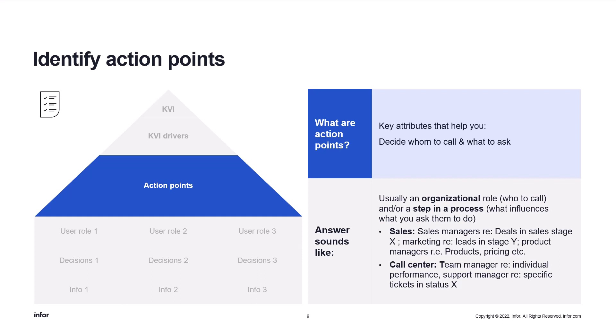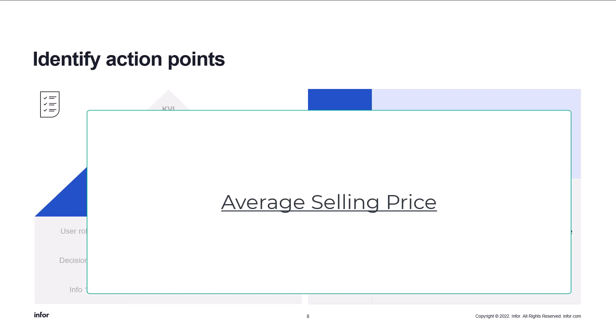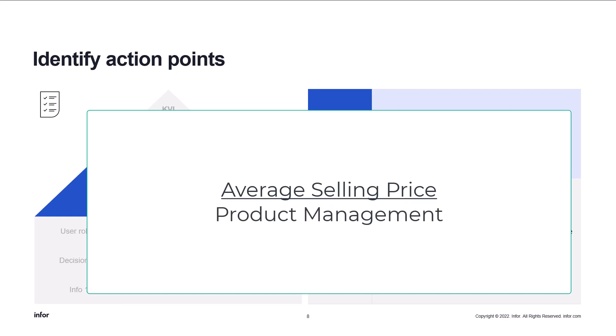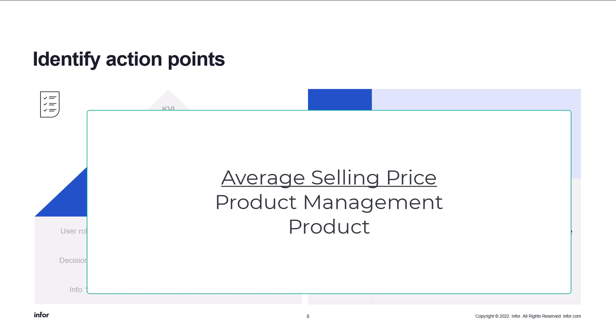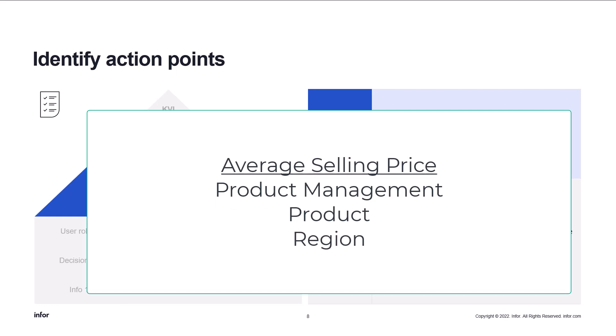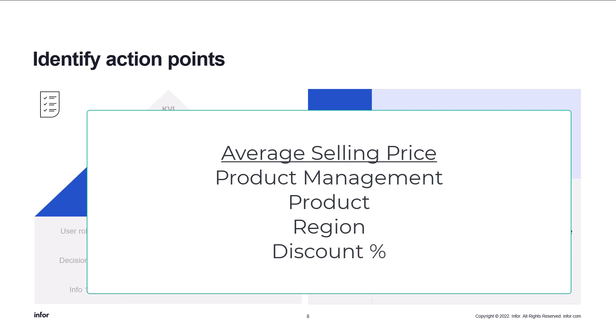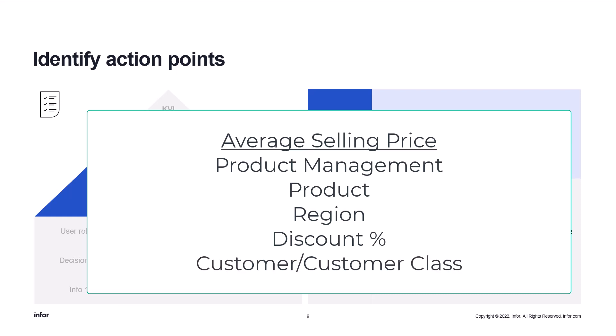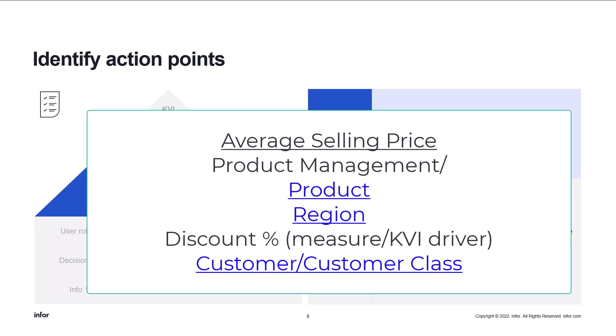The answer is usually an organizational role — who to call — or a step in a process, which influences what you ask them to do. For example, average selling price is one of our drivers. The product manager is the person who decides what the average selling price is — obviously by product, but it could also be by region, meaning different regions have different pricing. Product discount levels are also decided by product management based on customer class. So now we have product, region, and customer class as attributes we need for our dashboard.